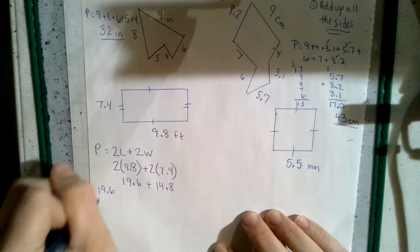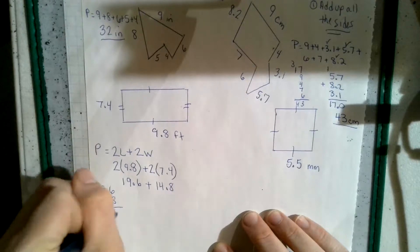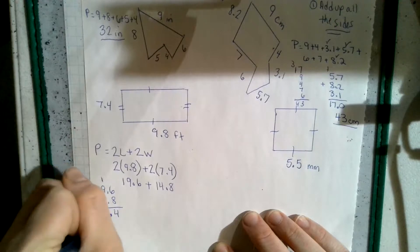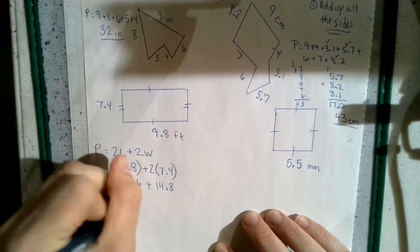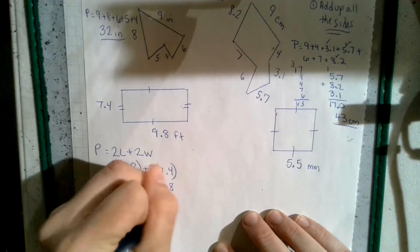And we have those together. So on the side, we can go 19.6, 14.8. Drop the decimal straight. That gives you 14. Carry the one, 9, 10, 11, 12, 13, 14. Carry the one. So our answer here is 34.4 feet.